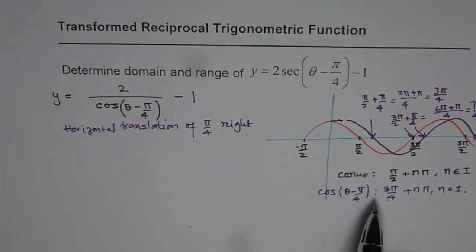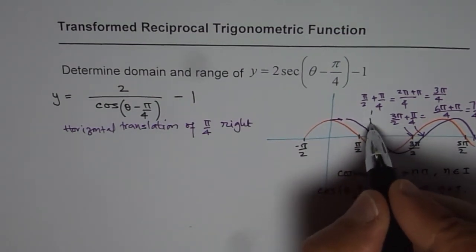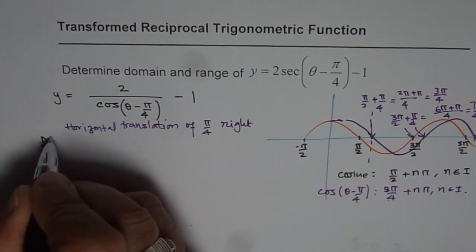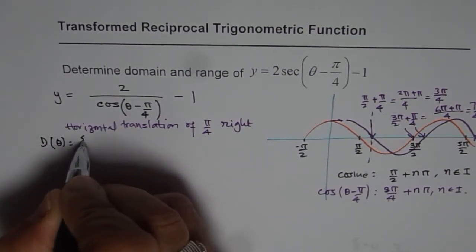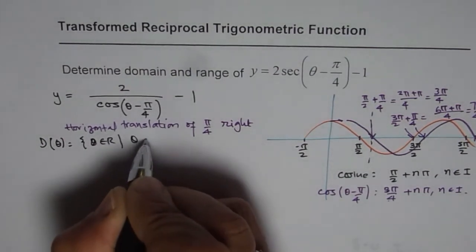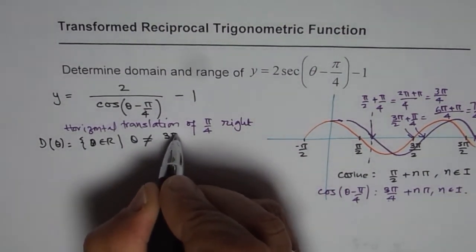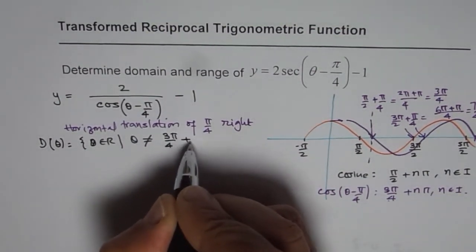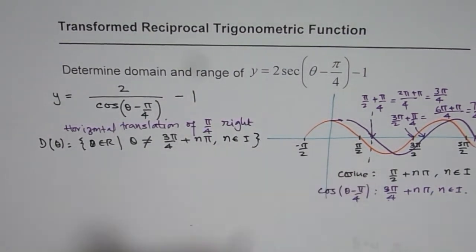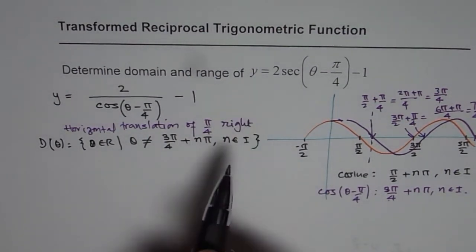Now with that result, we know secant will be reciprocal of this, so we will have vertical asymptotes for secant at this point. So those are the restrictions. Therefore, the domain of the function will be that theta belongs to real numbers where theta is not equal to 3 pi by 4 plus n pi, where n belongs to set of integers. So that is how you get the domain for reciprocal function.